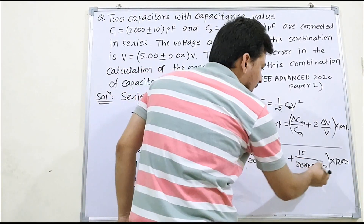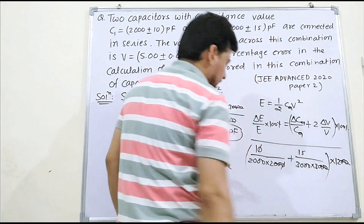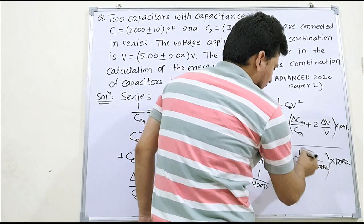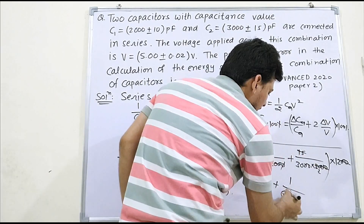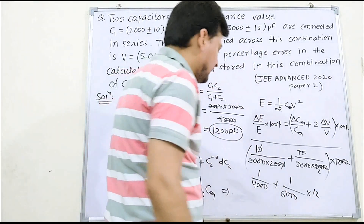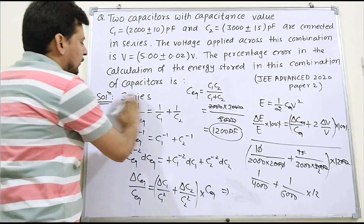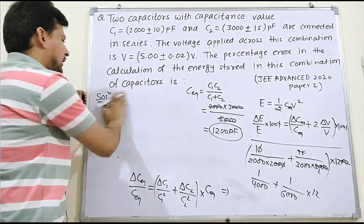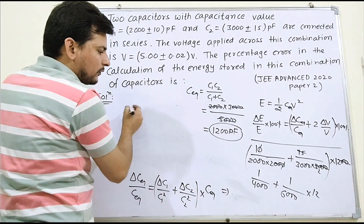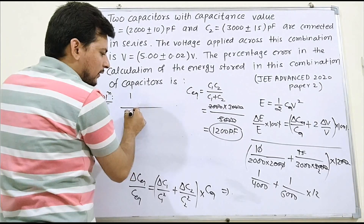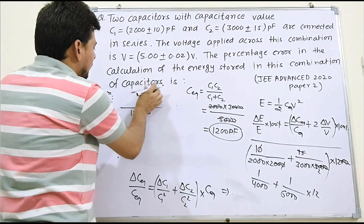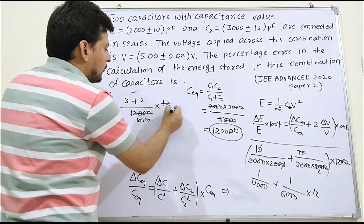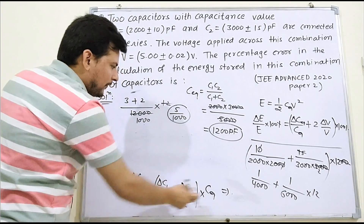Zeros cancel in steps — 10 zeros and 20 zeros reduce progressively. This leaves 1/4000 + 1/6000, multiplied by 1200. Taking LCM of 4 and 6 gives 12, so we get (3 + 2)/12000 × 1200 = 5/12000 × 1200 = 5/1000. So the full expression δC_eq/C_eq equals 5/1000.